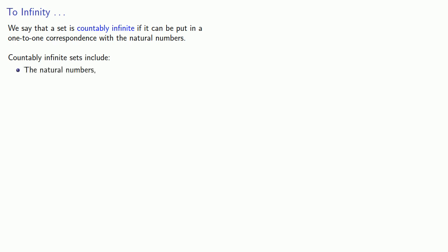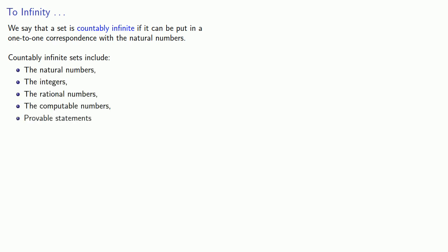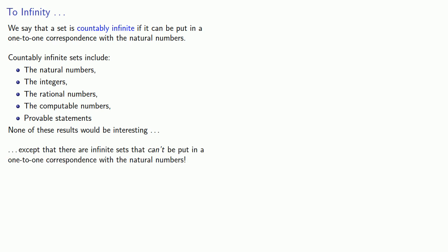A set is countably infinite if it can be put in a one-to-one correspondence with the natural numbers. As we've seen, countably infinite sets include the natural numbers, the integers, the rational numbers, the computable numbers, provable statements, and so on. None of these results would be interesting, since aren't these all infinite sets anyway? Except that there are infinite sets that can't be put in a one-to-one correspondence with the natural numbers.